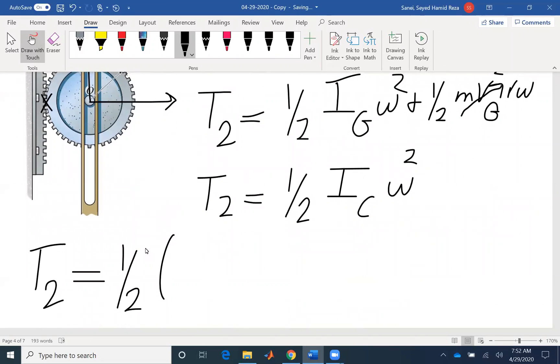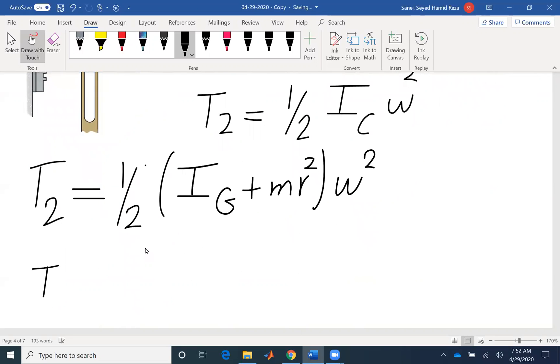So that's Ig plus M R squared omega squared. What is Ig? I have radius of gyration, so that makes it easy for me. That would be M K squared plus M R squared omega squared.